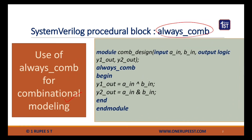The name of the module is `com_design`. There are two inputs: `a_in` and `b_in`, and outputs `y1_out` and `y2_out`. Within the `always_comb` procedural block, between `begin` and `end`, there are two blocking assignments: `y1_out = a_in ^ b_in` and `y2_out = a_in & b_in`.